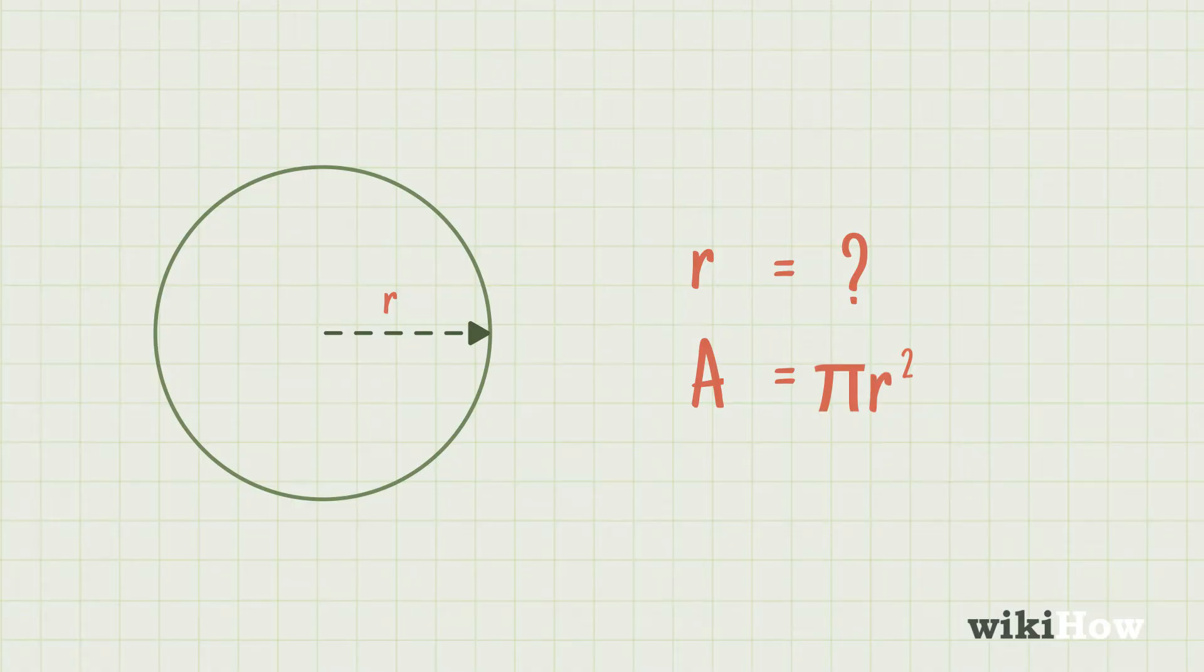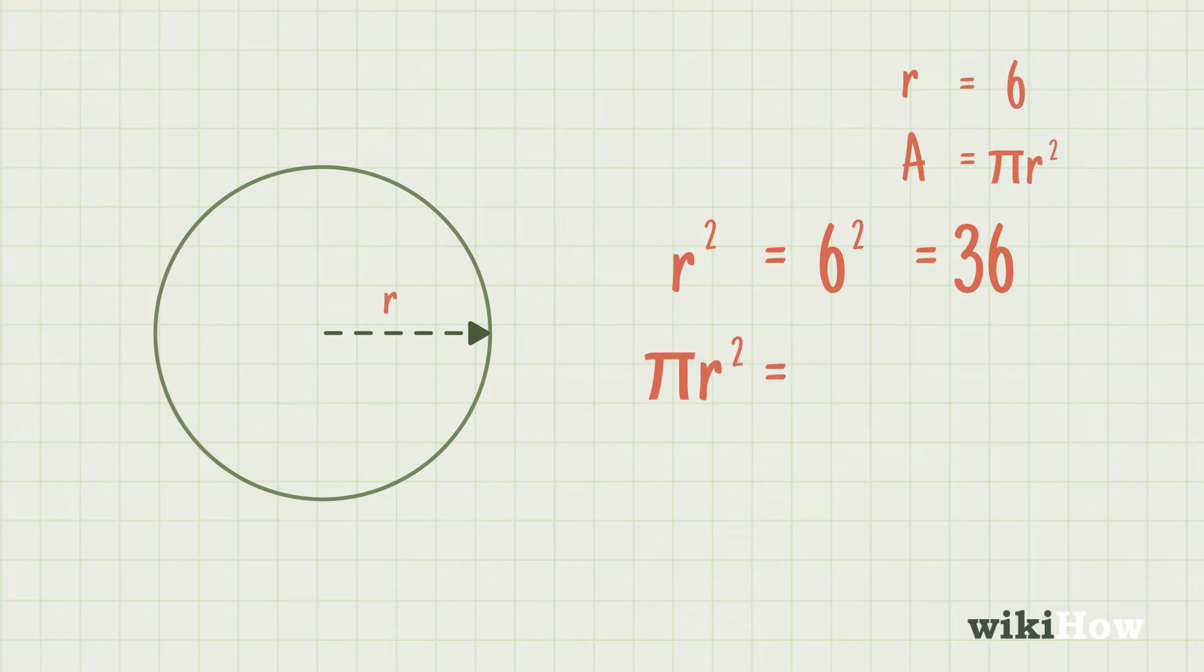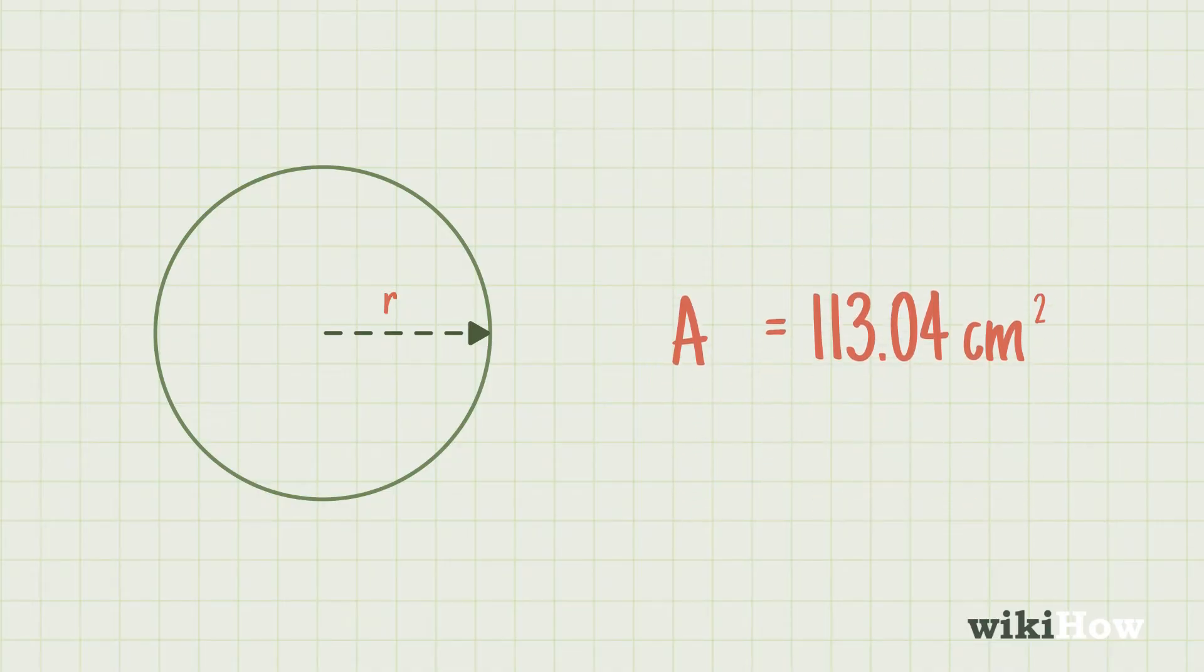For example, if the radius of the circle is 6 inches, first you would square 6 and get 36. Then you would multiply 36 by pi and get 113.04. Therefore, the area of the circle is 113.04 inches squared.